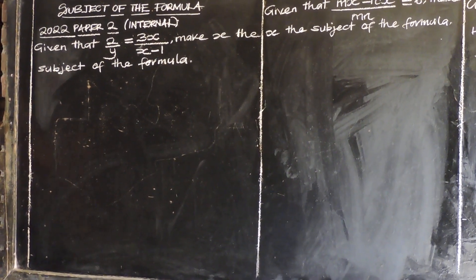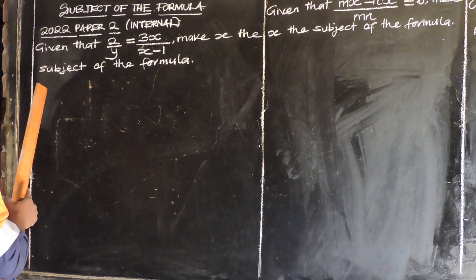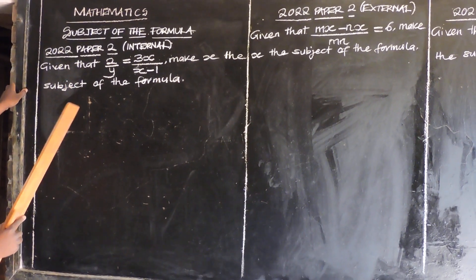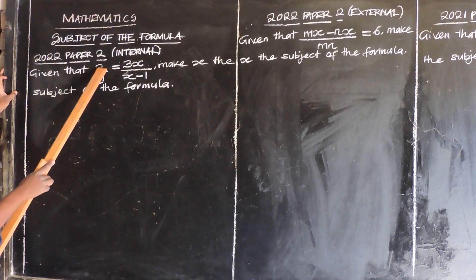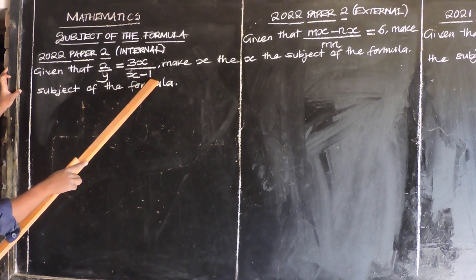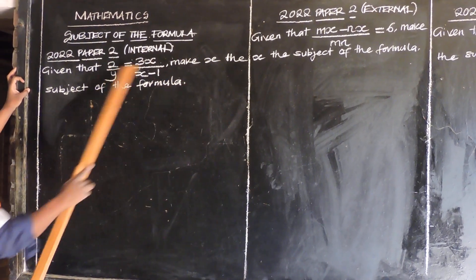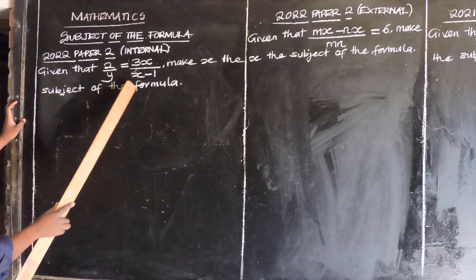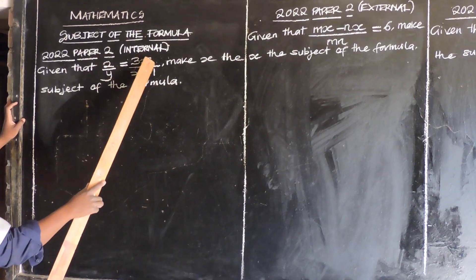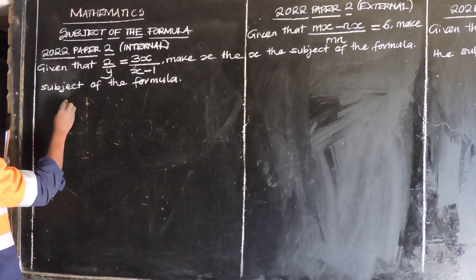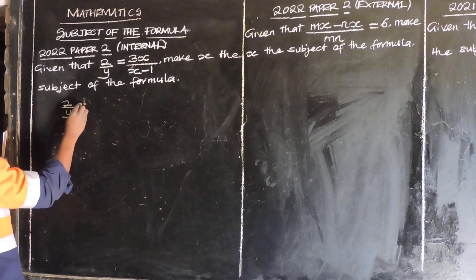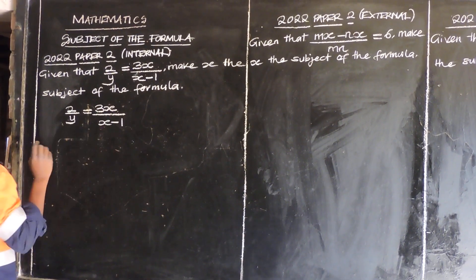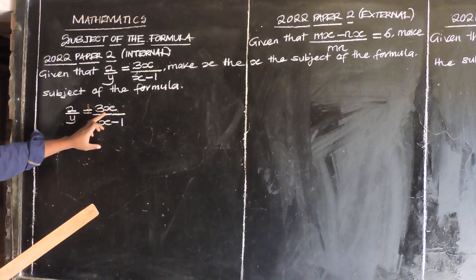Today's presentation we are going to look at the subject of the formula. The first example is going to be a 2022 paper 2, that is for internal candidates. It says: given that 2 over y is equal to 3x over x minus 1, make x the subject of the formula. They want us to express this expression, to subject it to x.